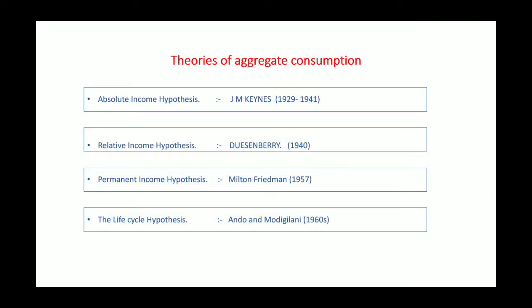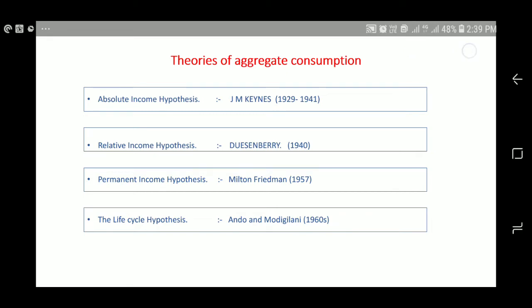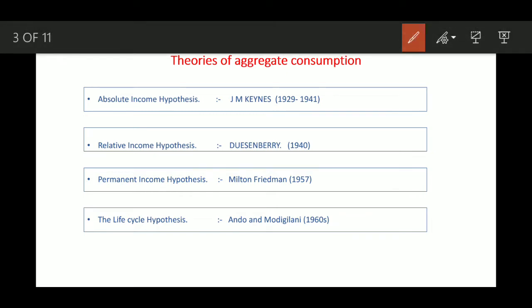The theories of aggregate consumption are: the Absolute Income Hypothesis by John Maynard Keynes, the Relative Income Hypothesis by Duesenberry in 1940, the Permanent Income Hypothesis by Milton Friedman, and the Life Cycle Hypothesis. Let us study them one by one.